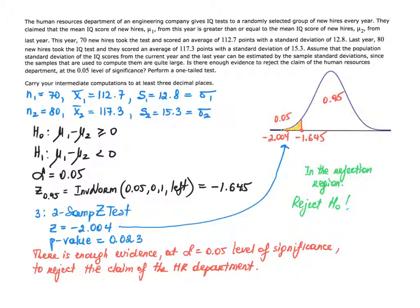First, a few important statements that allow us to use the Z-test. We have an assumption that population standard deviations equal the sample standard deviations because we have large sample sizes — S₁ equals σ₁ and S₂ equals σ₂. This means I have sigmas and can perform a Z-test, not a T-test. Also, nowhere do we have an assumption of normality of the populations, but because the sample sizes are quite large, we can perform the test without that assumption and are safe to use the Z-test.